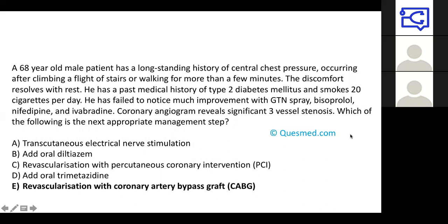A 62-year-old has chest pressure after climbing a flight of stairs — stable angina. He has pain on exertion with risk factors, not really responding to GTN, and angiogram shows significant three-vessel stenosis. The answer is coronary artery bypass graft — CABG. Three-vessel stenosis should be a bright spark for you: three-vessel stenosis equals CABG. The other options include TENS — not very useful here — and medical treatments for angina, but with three-vessel disease you have something fixable, so medical therapy alone isn't appropriate.